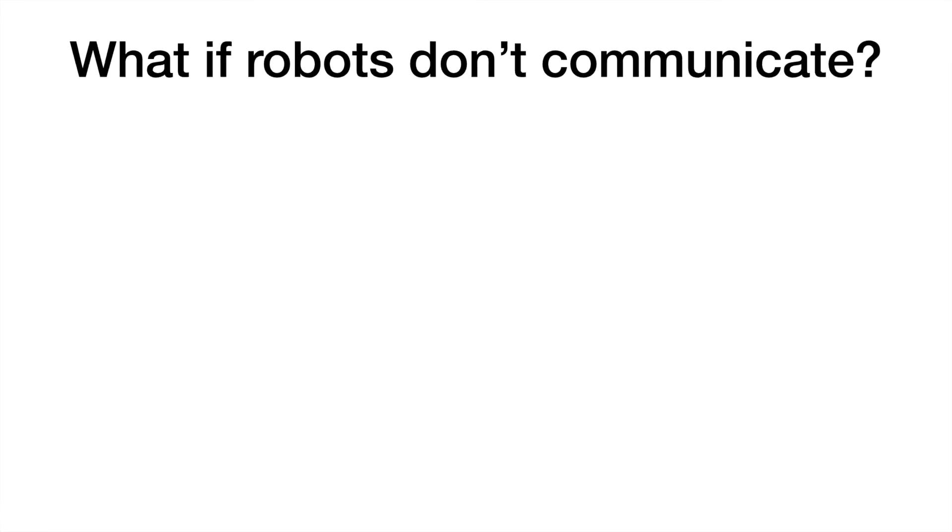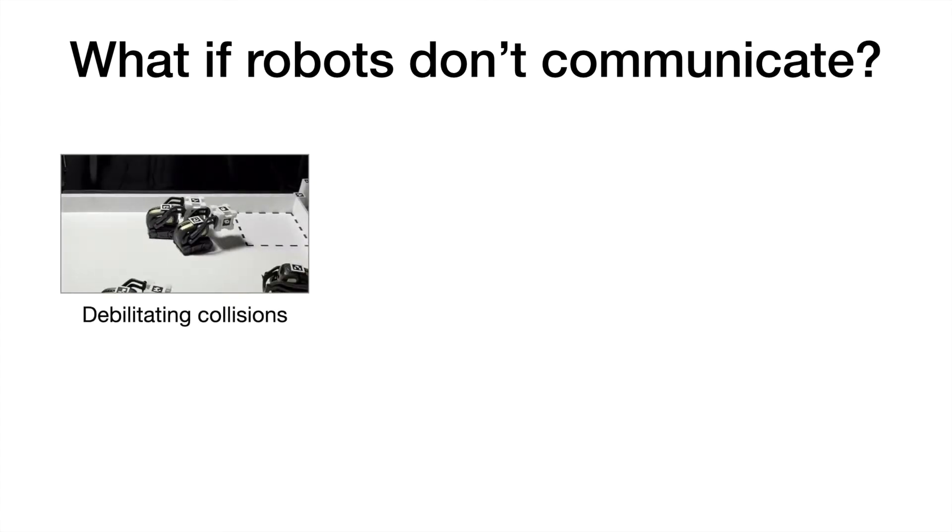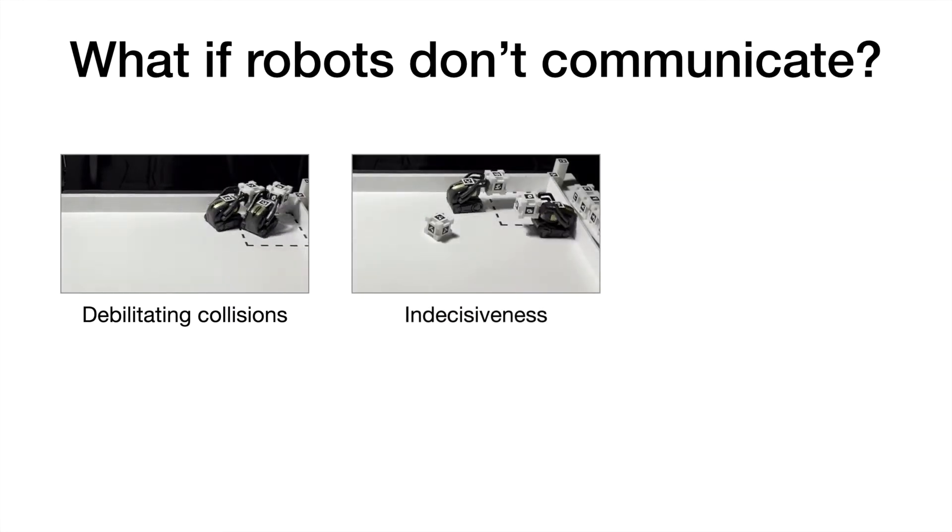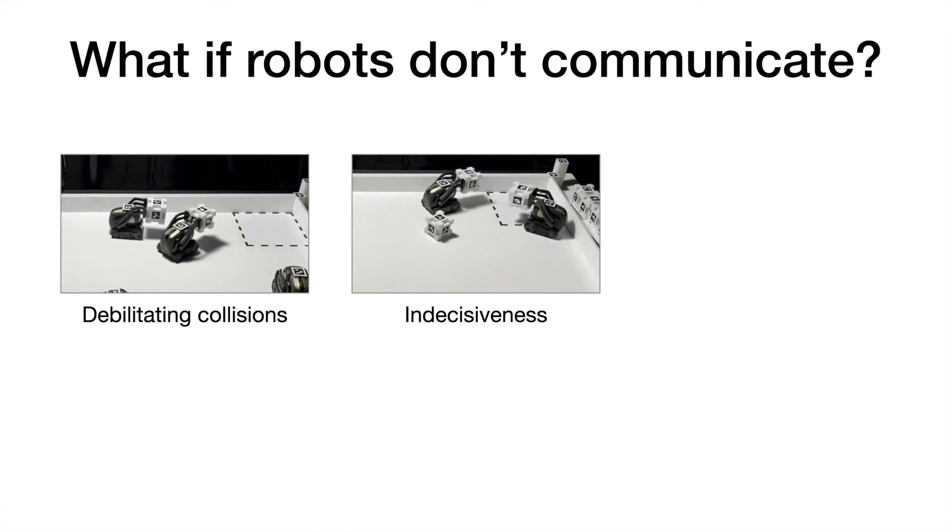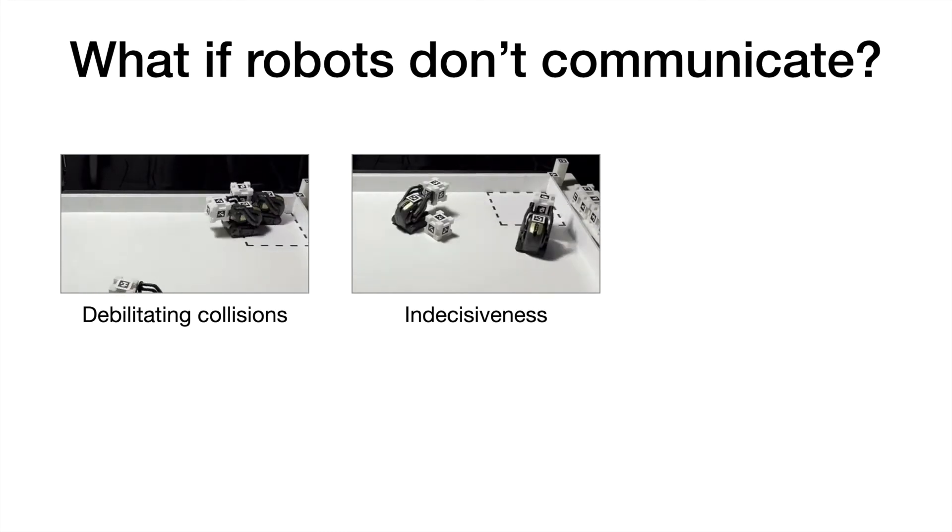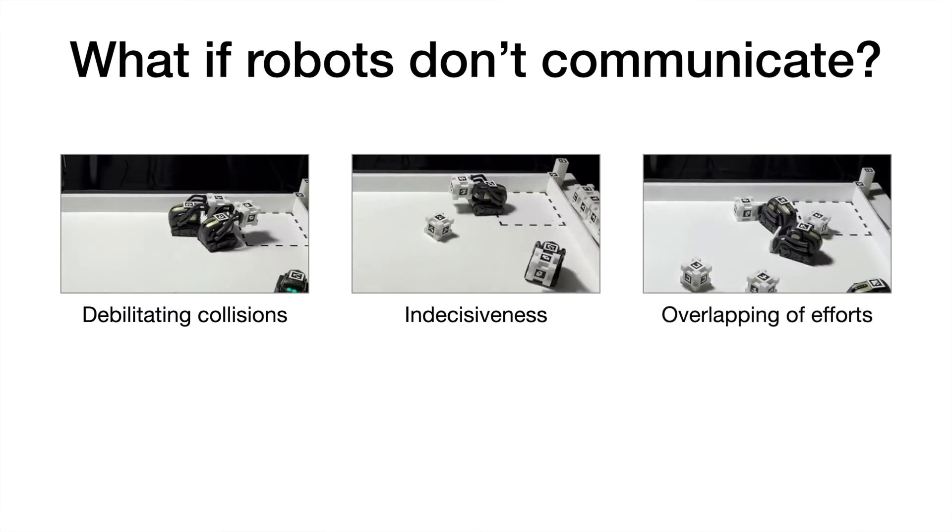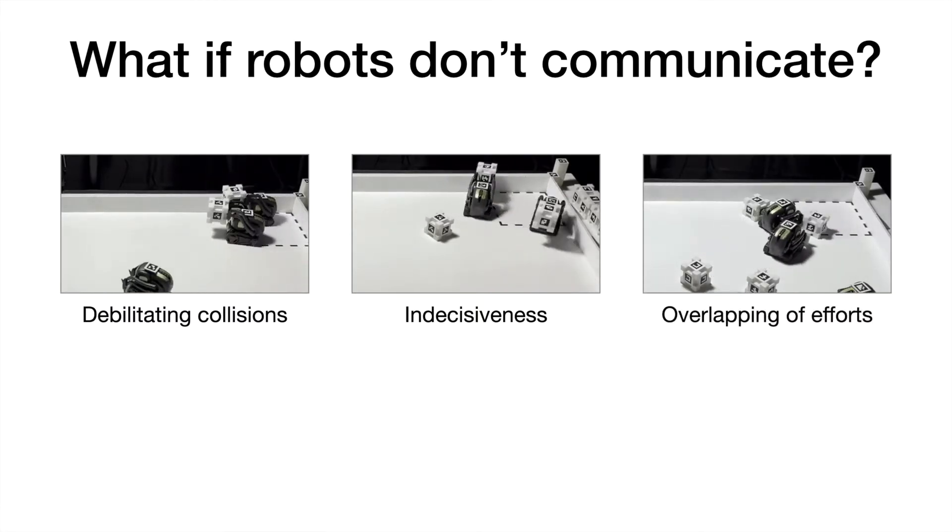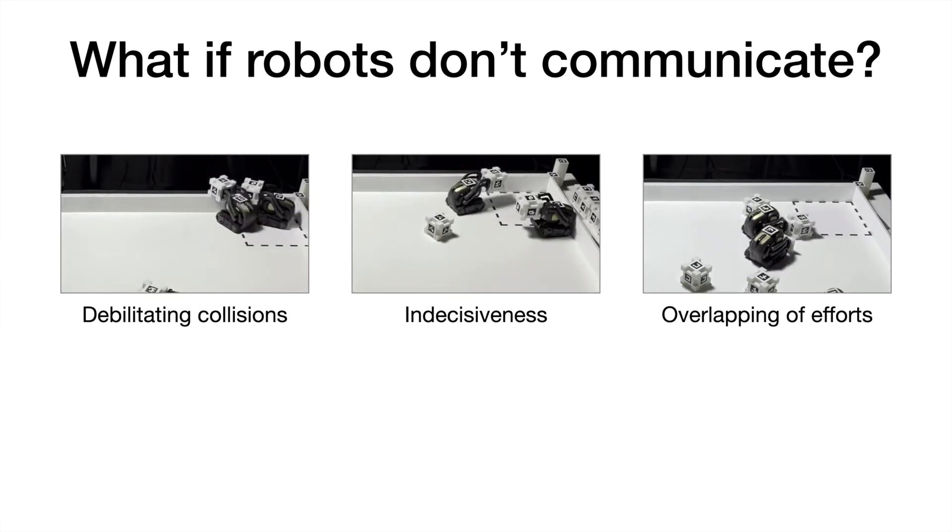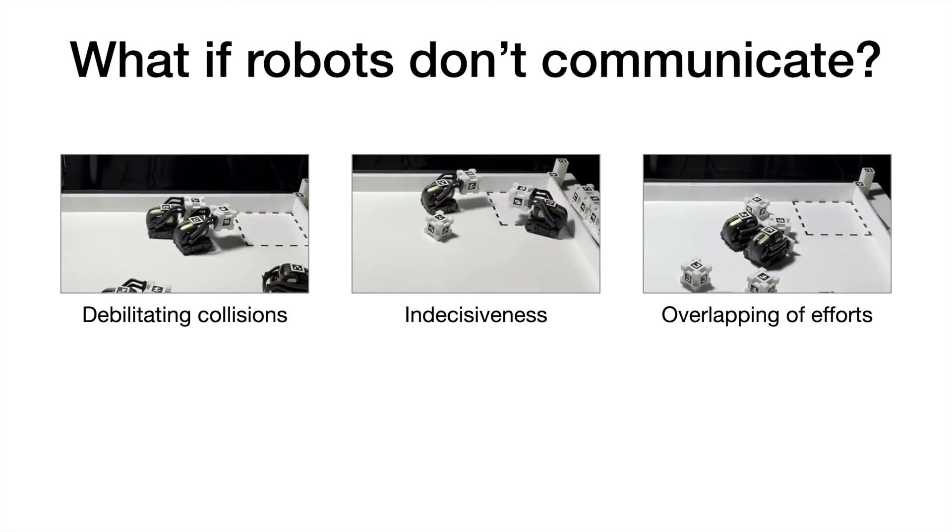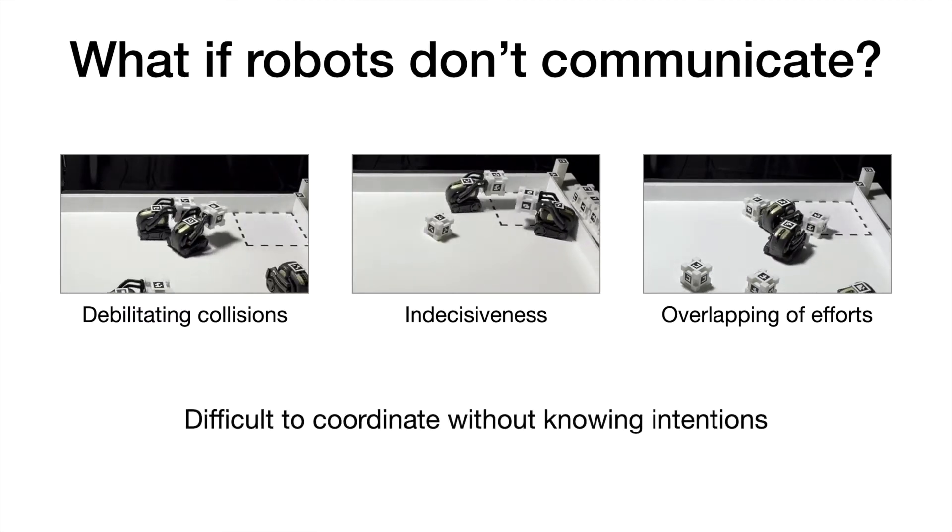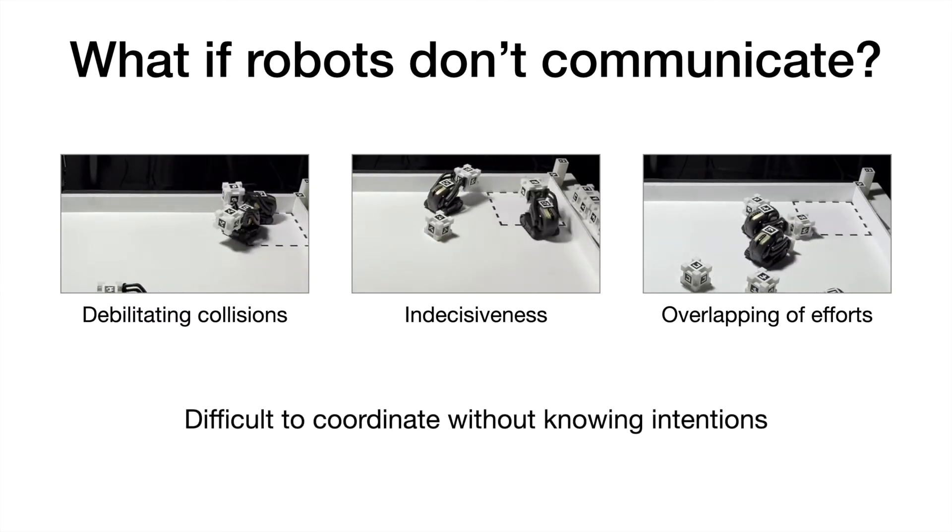Now consider what might happen if the robots do not communicate. They might move in the same direction, resulting in a debilitating collision. Or they might actively avoid colliding with each other, which results in indecisive and inefficient behavior. Or they might happen to choose the same subtask, which leads to an overlapping of efforts. In all these cases, the robots can still get the job done, but they are not able to coordinate very well without knowing each other's intentions.